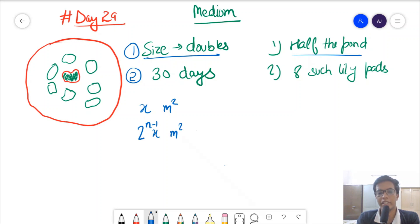So let's say it is day 1, d equals 1, the area will be x. On d equals 2, it will be n equals 0, so 2 power 0 is 1, so 1 into x. D equals 2 pe kya hoga? 2x.